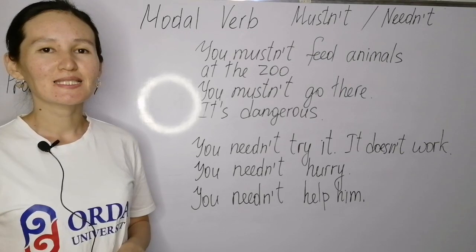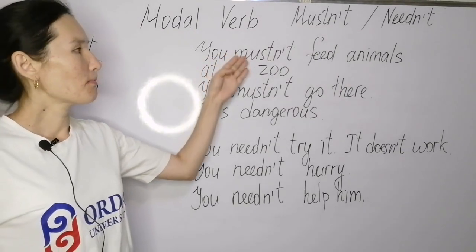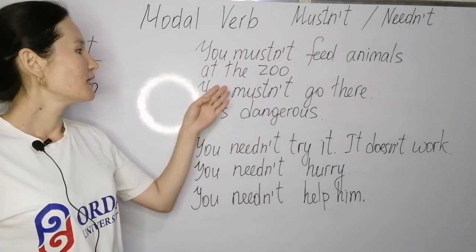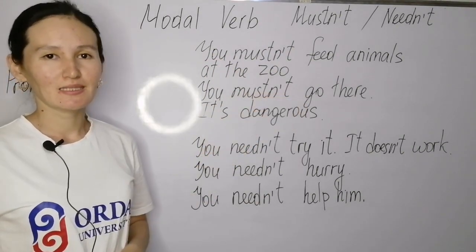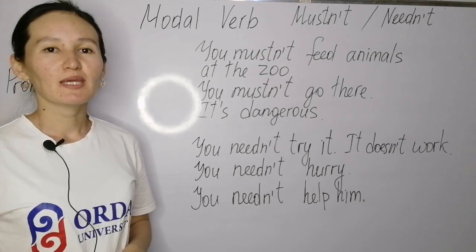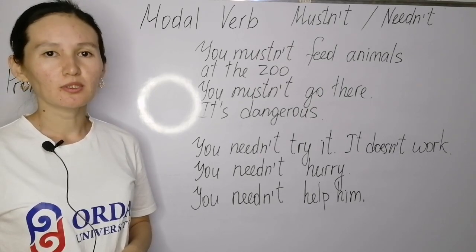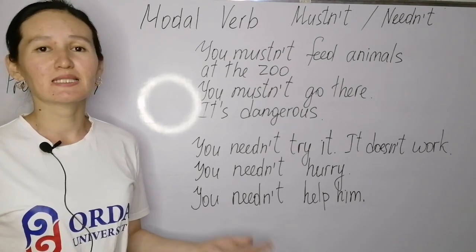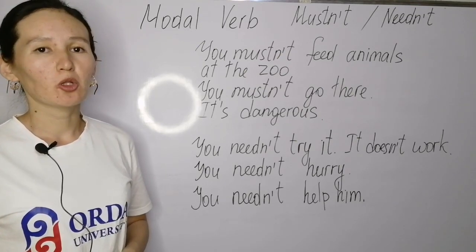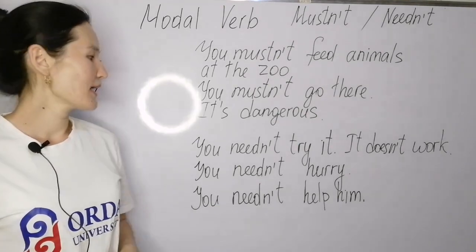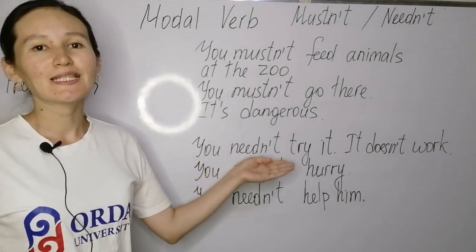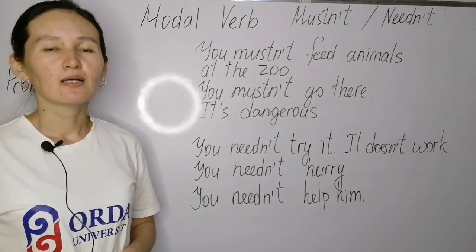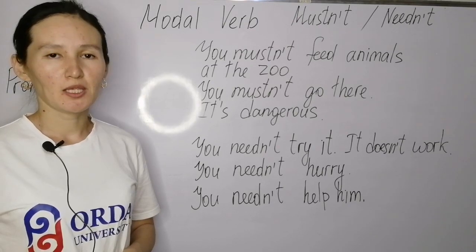Let's take a look at the verbs. Mustn't: mustn't feed, mustn't go. You may say mustn't or mustn't — you mustn't go, you mustn't stay, you mustn't help, you mustn't wear. And needn't: needn't try, needn't go, needn't use — needn't plus bare infinitive.